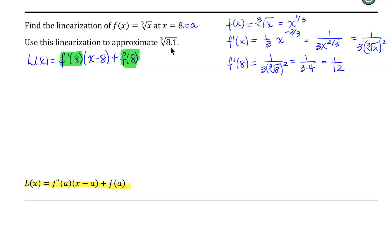So we now know what f prime of 8 is, and we can replace that in our formula. We also need f of 8. So f of 8 is simply the cube root of 8, and since 8 is a perfect cube, the cube root of 8 is 2. So we now know what goes in the place of f of 8.